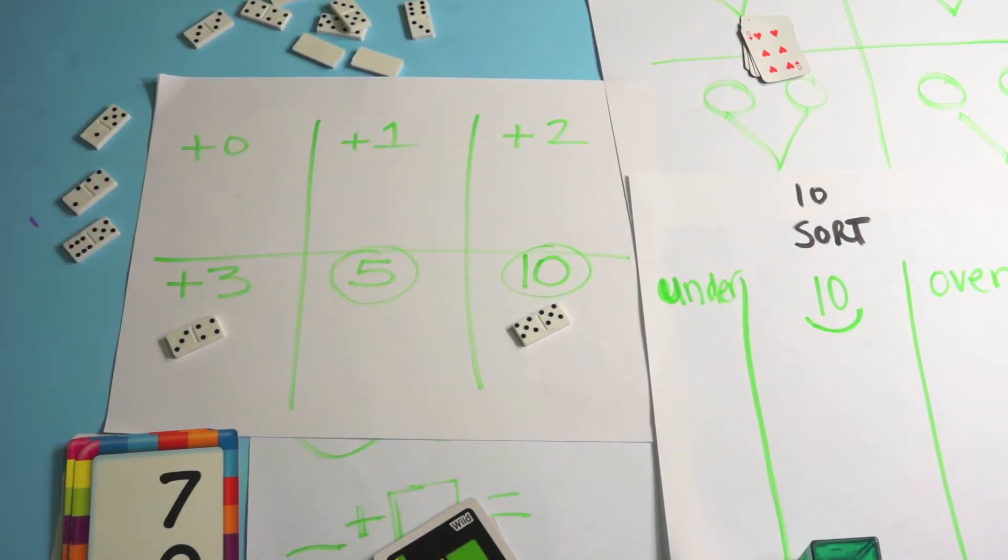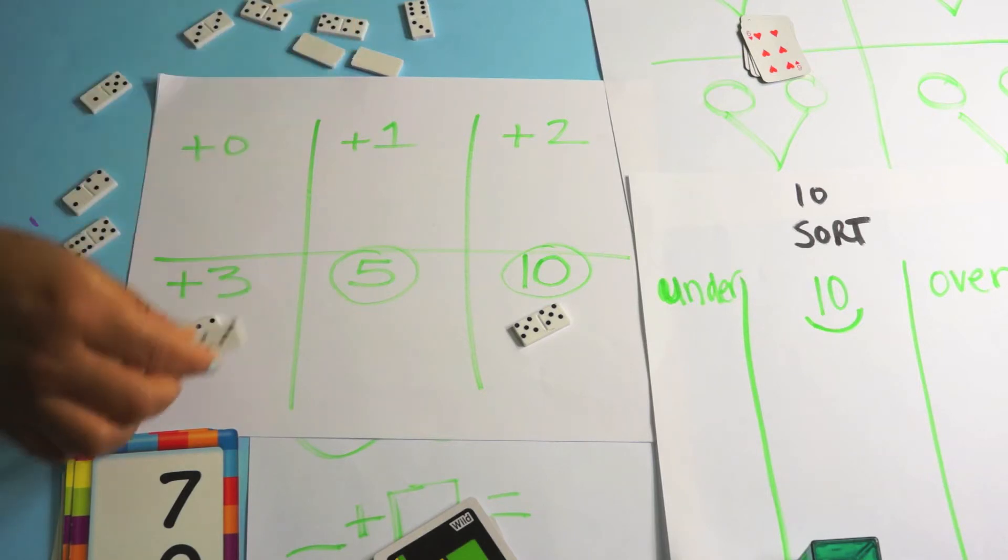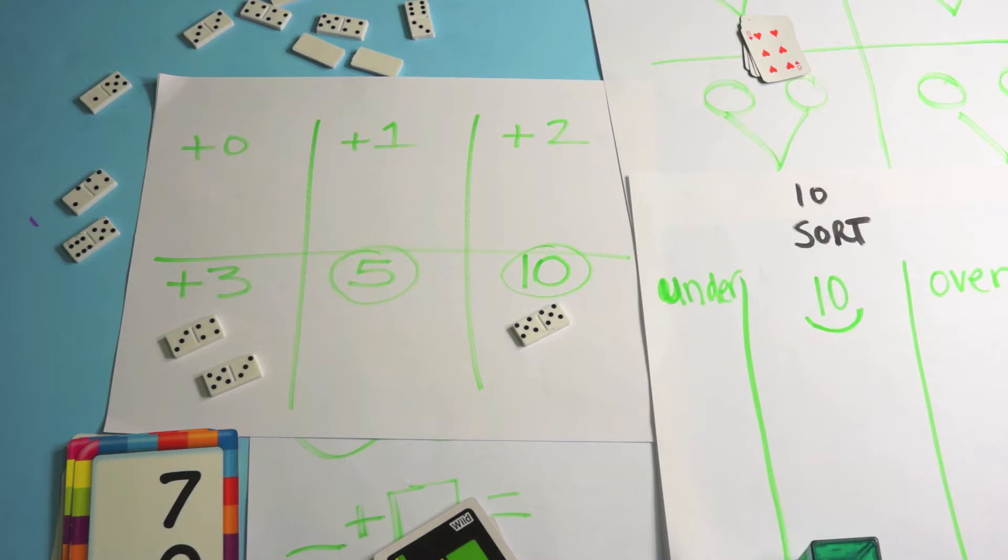So that's why I have plus one and plus two and plus three. They should know whenever I see plus one, plus two, plus three, I'm just going to count on. So I'm at four and then I add on three. Five, six, seven, right. Here's a plus three fact. I'm at five and then I just count on six, seven, eight, right.